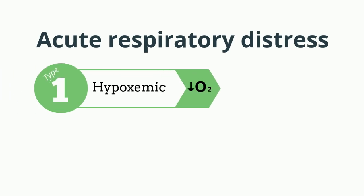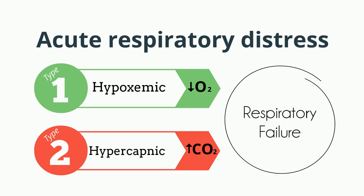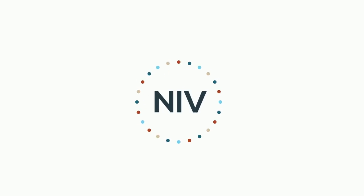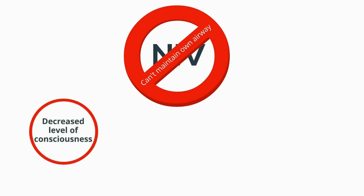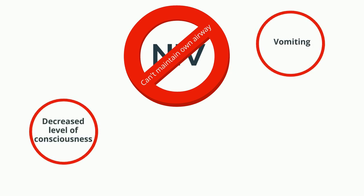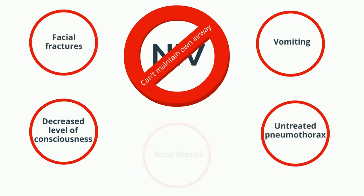This may be caused by either type 1 hypoxemic or type 2 hypercapnic respiratory failure. NIV is contraindicated if the patient cannot maintain their own airway — for example, when the patient has decreased or fluctuating level of consciousness, vomiting, untreated pneumothorax, facial fractures, and nosebleeds. Any of those conditions make the patient ineligible for NIV therapy.